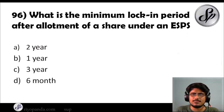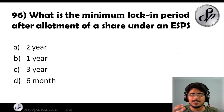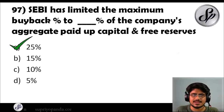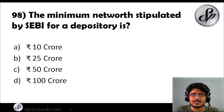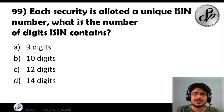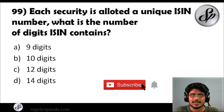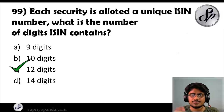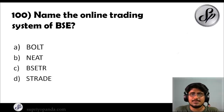Question ninety-six: what is the minimum lock-in period after allotment of a share under an ESPS — Employee Stock Purchase Scheme? The answer is one year. Question ninety-seven: SEBI has limited the maximum buyback percentage to what percentage of the company's aggregate paid-up capital and free reserves? The answer is 25%. Question ninety-eight: the minimum net worth stipulated by SEBI for a depository is how much? The answer is 100 crore rupees. Question ninety-nine: each security is allotted a unique ISIN number — International Securities Identification Number. How many digits does ISIN contain? The answer is 12 digits.